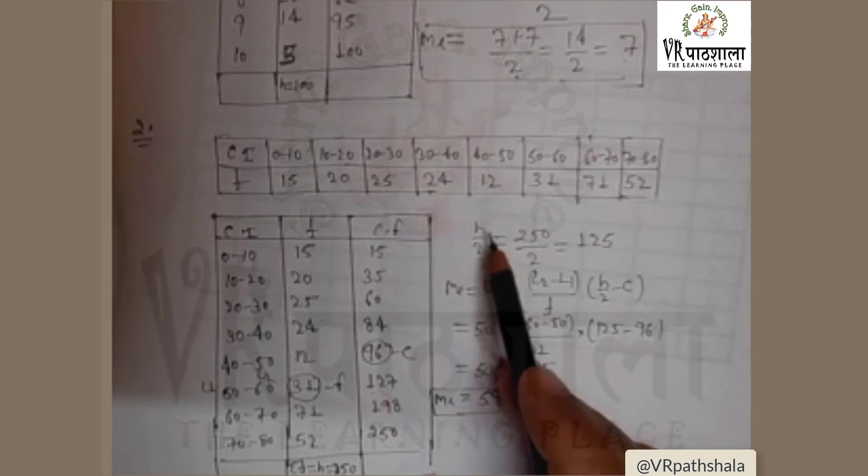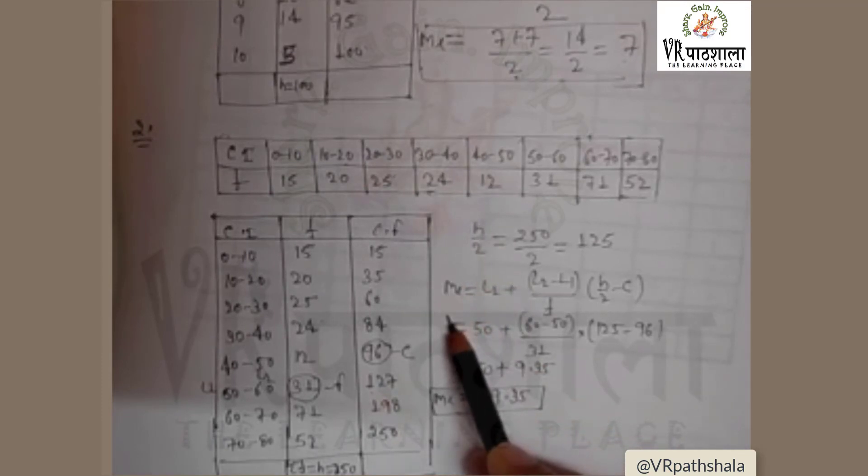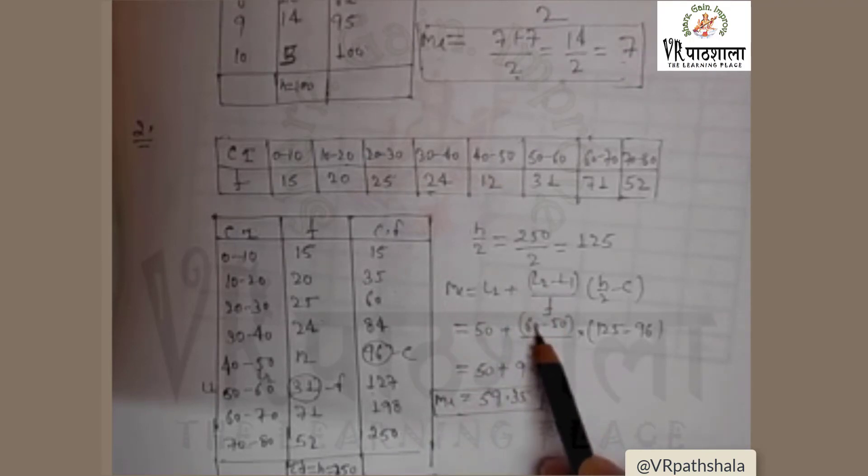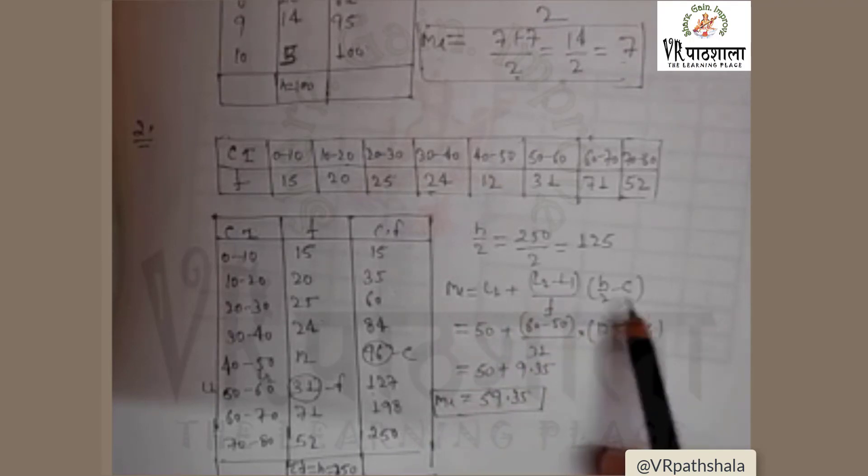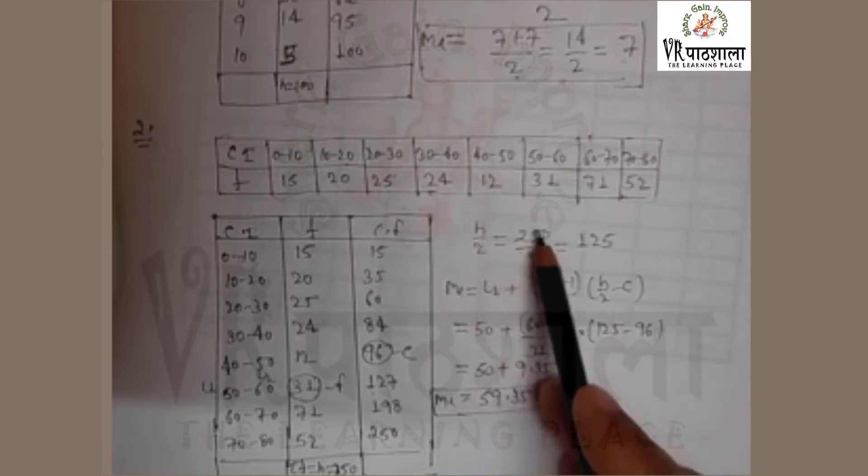Now we apply the formula for continuous series: median equals l1 plus l2 minus l1 upon f, n by 2 minus c. For this we calculate n by 2, that is 250 divided by 2, 125. Now 125 is in 127, so the median class is 50 to 60.